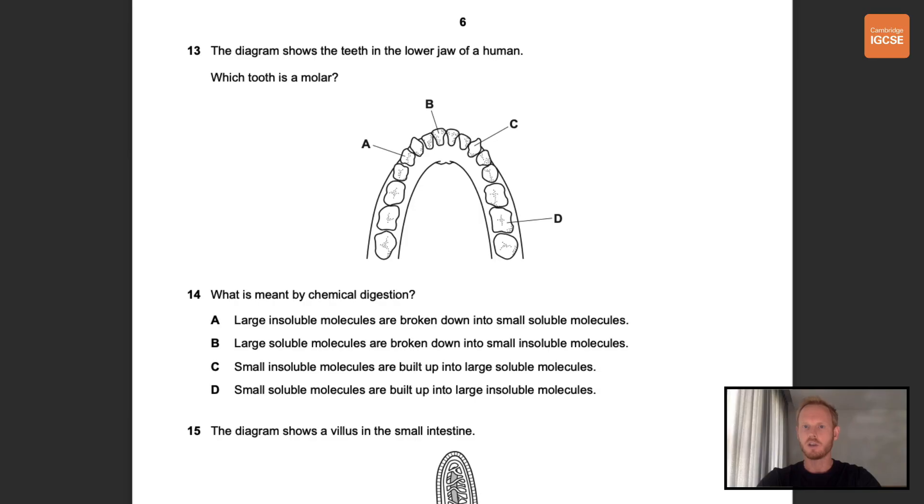Number 13. The diagram shows the teeth in the lower jaw of a human. Which tooth is a molar? So A is a premolar, B an incisor, and C a canine. So the correct answer is D. Molars have four or five knobbly surfaces called cusps for crushing and grinding food.